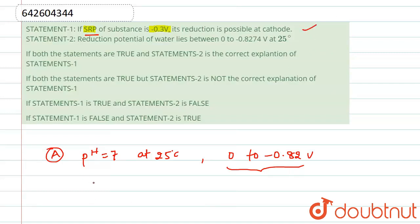Moving further to our second statement, which is saying that reduction potential of water lies between 0 to -0.824 volt at 25°C.